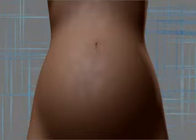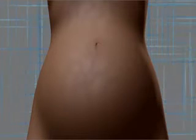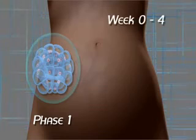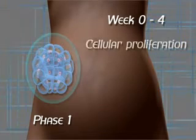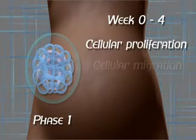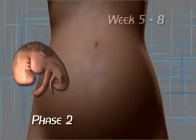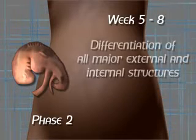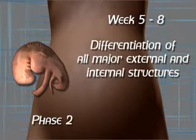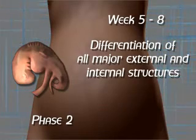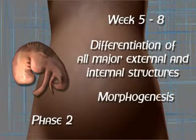Prenatal development is divided into three successive phases. The first phase spans the first four weeks of development. It involves cellular proliferation and migration with some differentiation of cell populations. The second phase spans the next four weeks. It is characterized by the differentiation of all major external and internal structures. This process is termed morphogenesis.